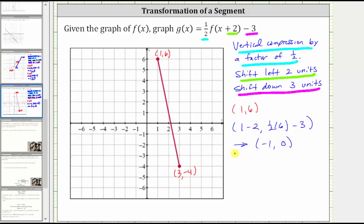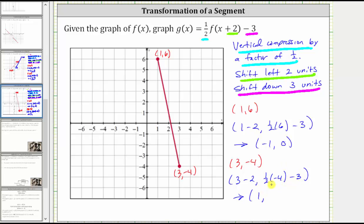Now performing the same transformation on the other endpoint, three comma negative four: to shift the graph left two units, we subtract two from the x-coordinate. To perform the vertical compression by a factor of one half, we multiply the y-coordinate by one half, and then to shift the graph down three units, we subtract three. Simplifying, we have an x-coordinate of three minus two, which is one, and a y-coordinate of one half times negative four minus three. One half times negative four is negative two; negative two minus three is negative five. Let's plot these new endpoints and sketch g of x. Negative one comma zero is here, and one comma negative five is here.